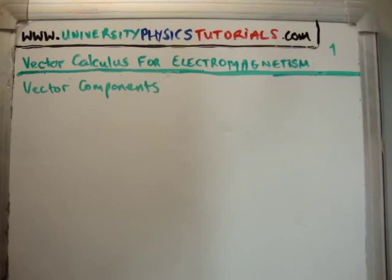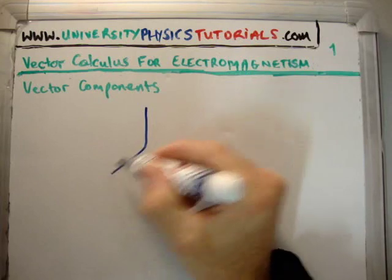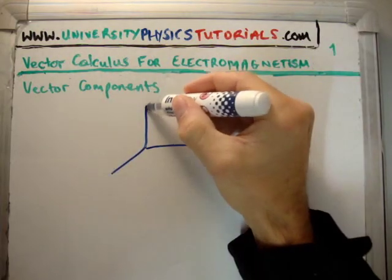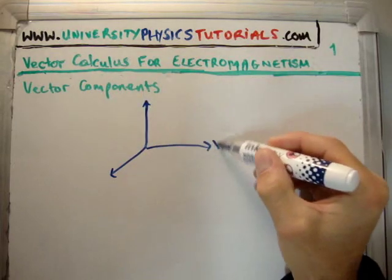In our rectangular coordinate system we can describe space as follows. Let's say we're talking about three spatial dimensions where we have the x-axis, the y-axis, and the z-axis.